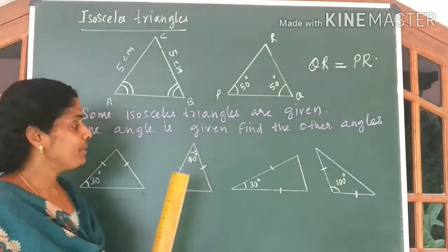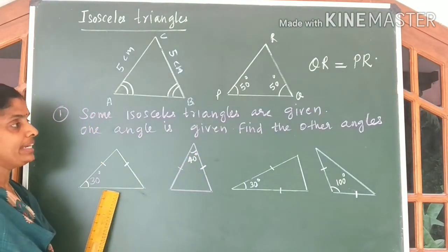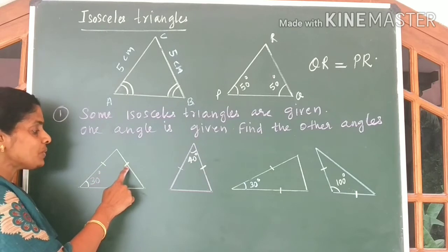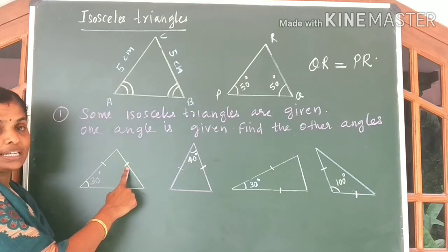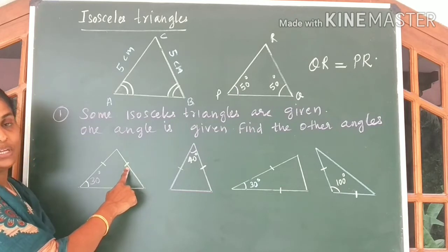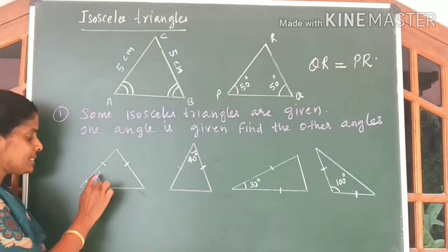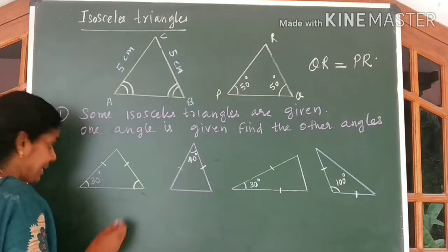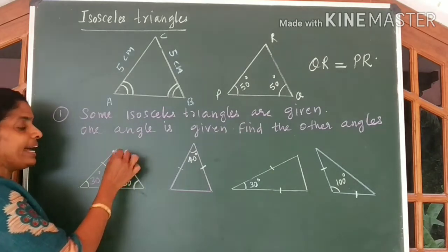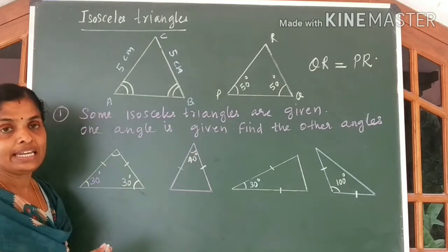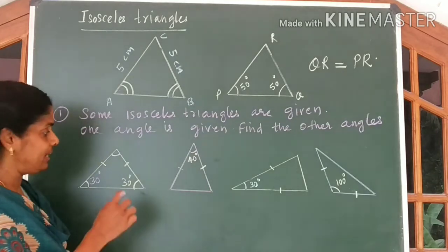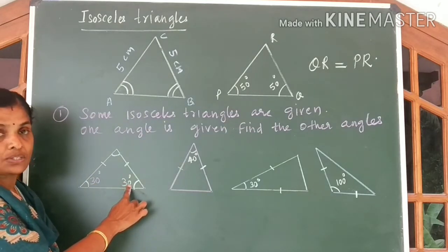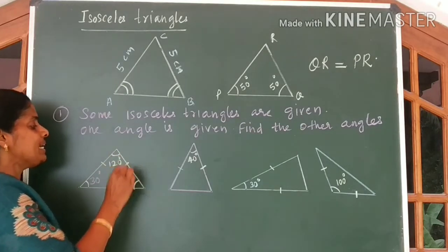Come to the question. We are asked to find the other angles in four figures. Look at the first question. These two sides are given to be equal. So angles opposite to equal sides are equal. Opposite to this side you have 30 degrees; therefore opposite to the equal side I can write 30 degrees. The sum of all angles in a triangle is 180 degrees. So 180 minus (30 plus 30) equals 180 minus 60, which gives 120 degrees as the third angle.